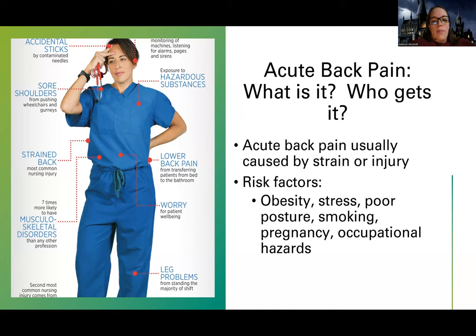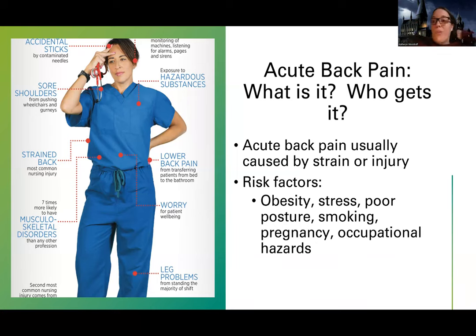Risk factors include having extra weight. Acute low back pain is most often in the low back because that's where we carry most of our weight, so extra weight increases the likelihood of acute back pain issues. Stress can also cause acute back pain, and poor posture is a big factor.